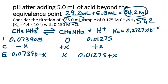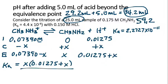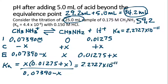Plugging those into the equilibrium expression for Ka, we get x times (0.01275 plus x) divided by (0.07390 minus x) being equal to 2.2727 times 10 to the minus 11. Then we solve for x. x equals 1.317 times 10 to the minus 10.